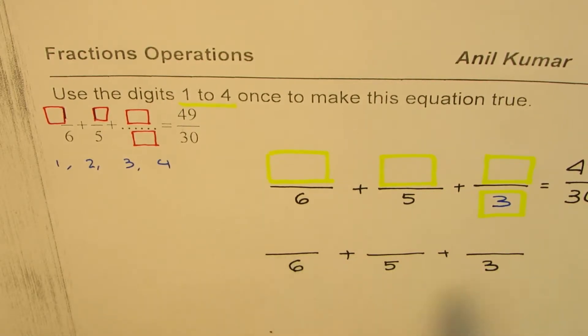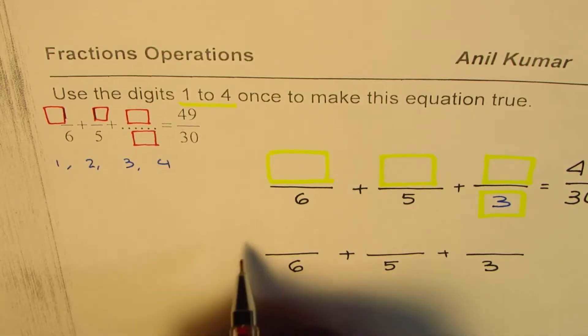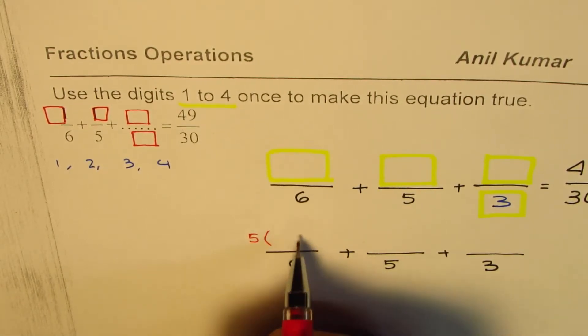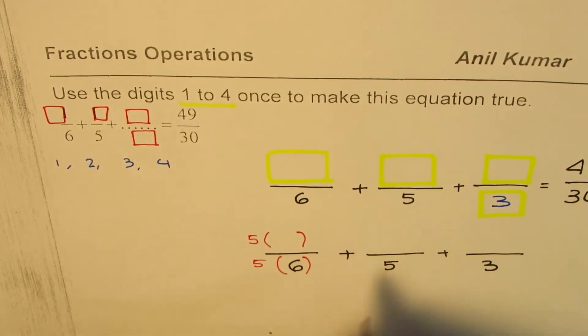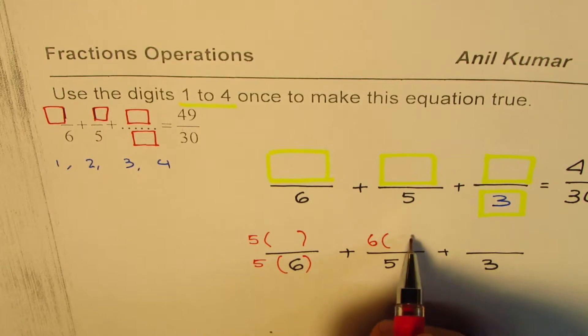If I have common denominator of 30, how will I get that? I have to multiply this by 5. 5 times this by 5 to get 30. So 5 times some number, and here it is 5 times 6 which will give me 30.